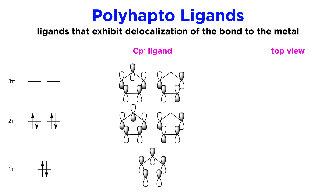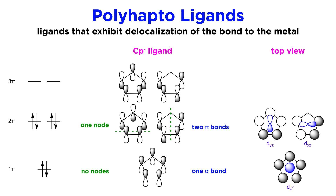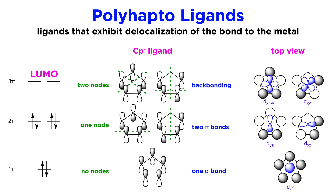Again, we need to look at the molecular orbitals to make sense of this. First we see the orbital with no nodes. This will allow for easy overlap with the dz² orbital of the metal to generate a sigma bond. Then there will be two degenerate pi molecular orbitals, each of which have one node. These will allow for overlap with these two perpendicular d orbitals on the metal to generate two pi bonds. Going to the next set of empty molecular orbitals for the ligand, which each have two nodes, we can see how backbonding from the metal is also possible, strengthening the interaction.